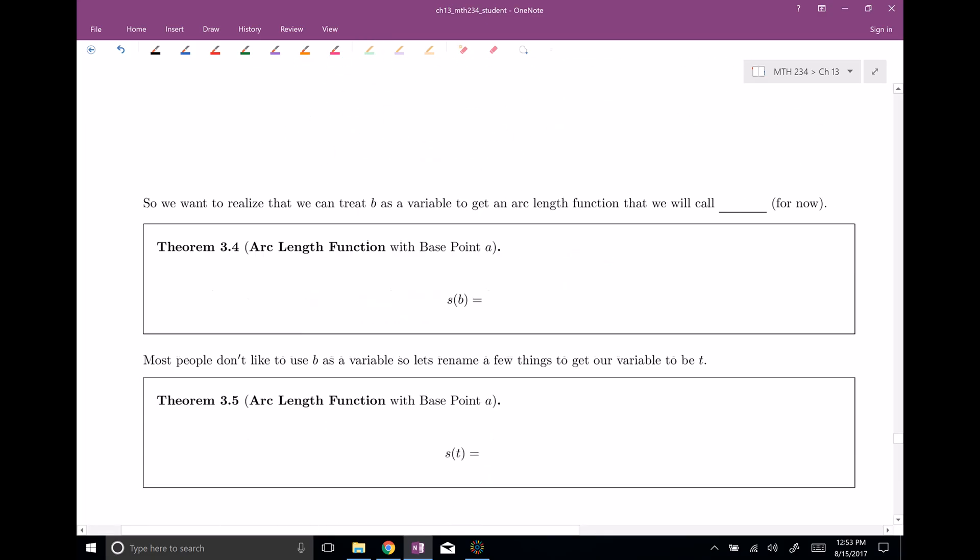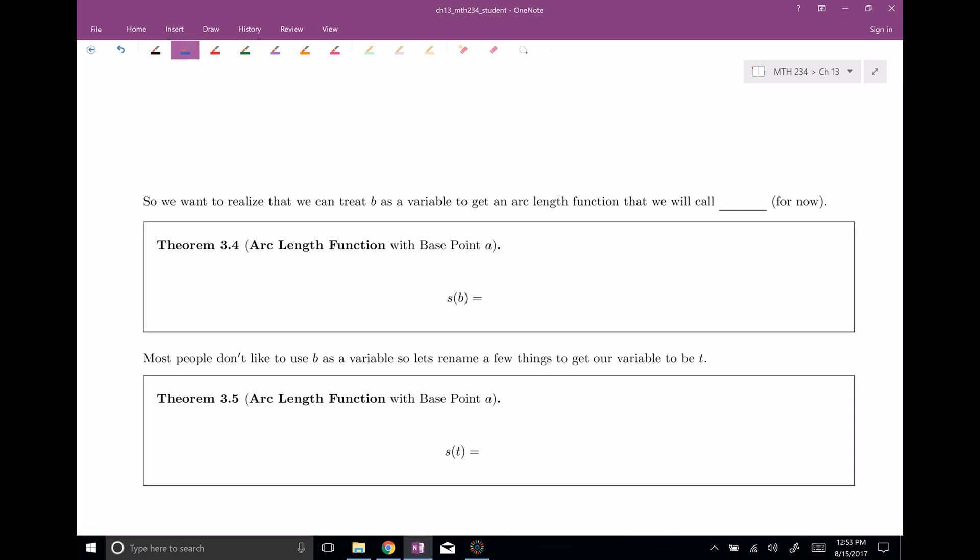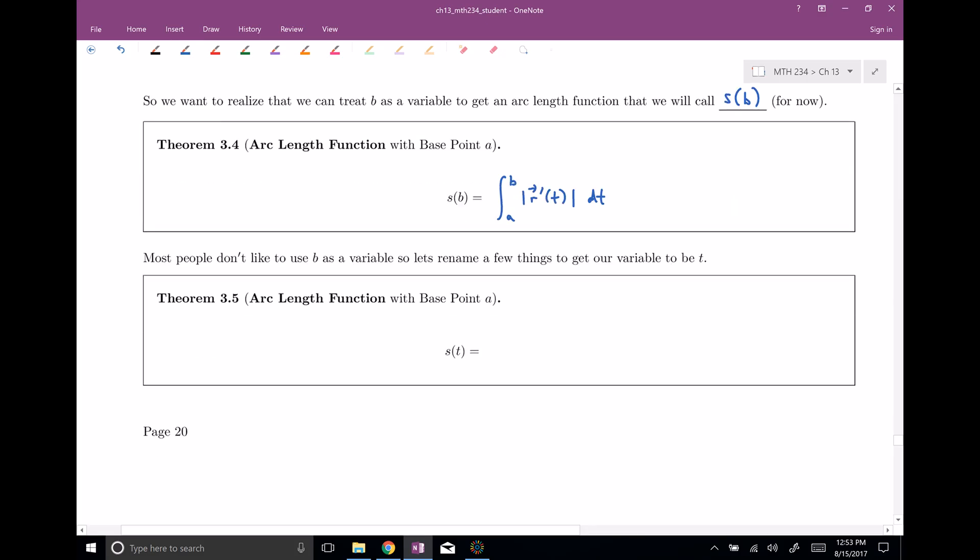All right, so that's how we can actually use this to calculate out arc length. The last thing that I wanna go over in this video is an arc length function. This will become very, very useful in chapter 16. We'll get a little bit of practice of it right now. But the idea here is that if we go ahead and we treat this b as a variable, then we can get an arc length function called s of b. For now, it's a little bit weird to think of b as a variable. So s of b is gonna be the integral from a to b of the magnitude of the derivative of our vector function, dt. But, yeah, people don't really like to use b as a variable, so let's rename it and let's get maybe a variable t or something like this. So I'd like s of t, for instance. So now this is gonna be an integral from a to t.